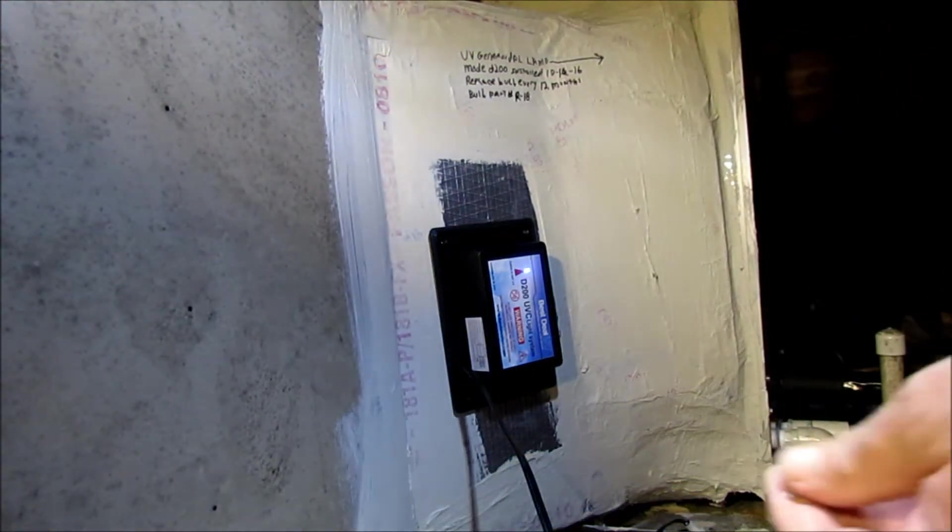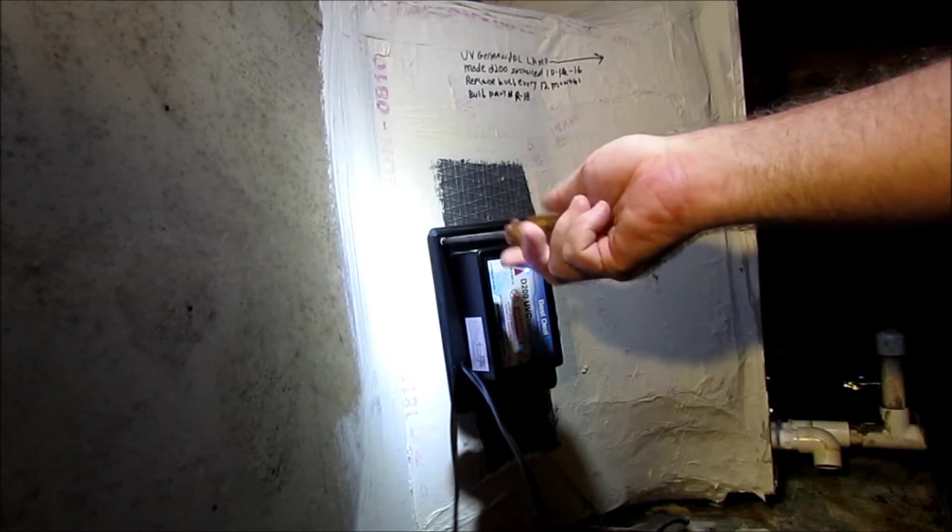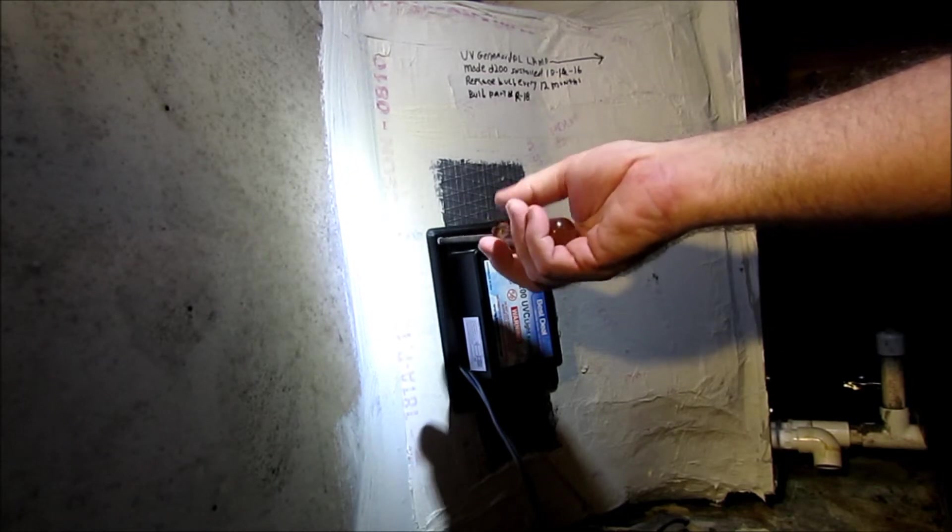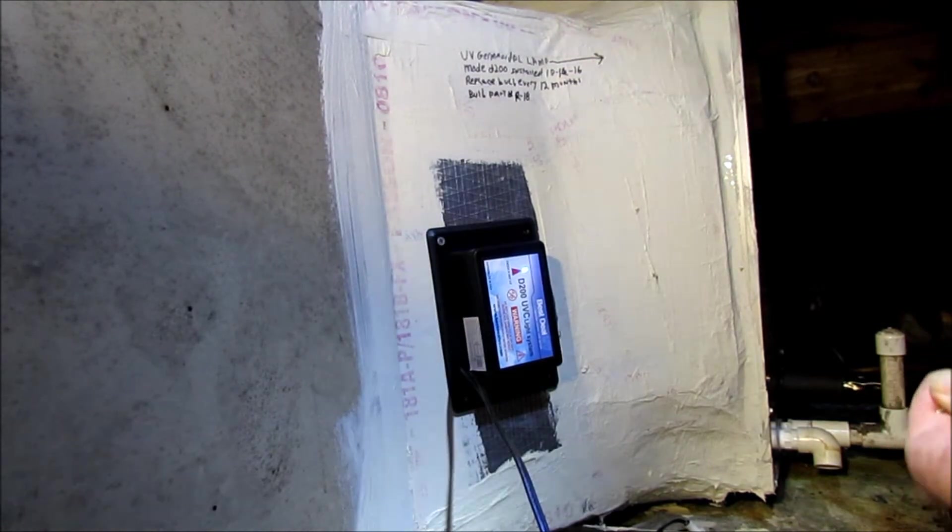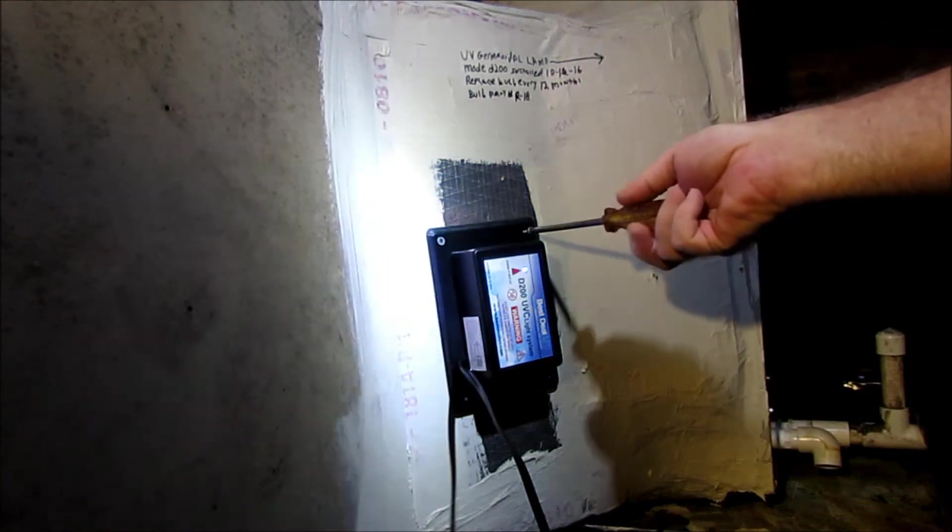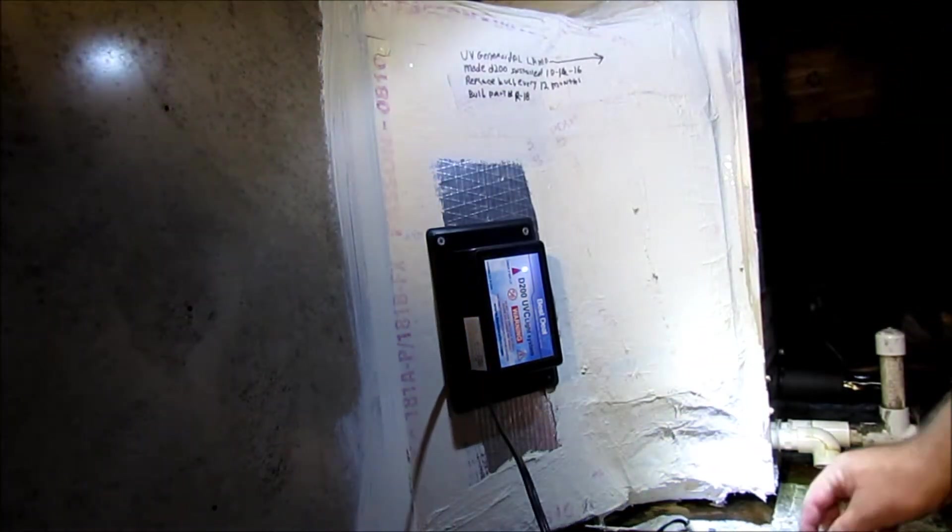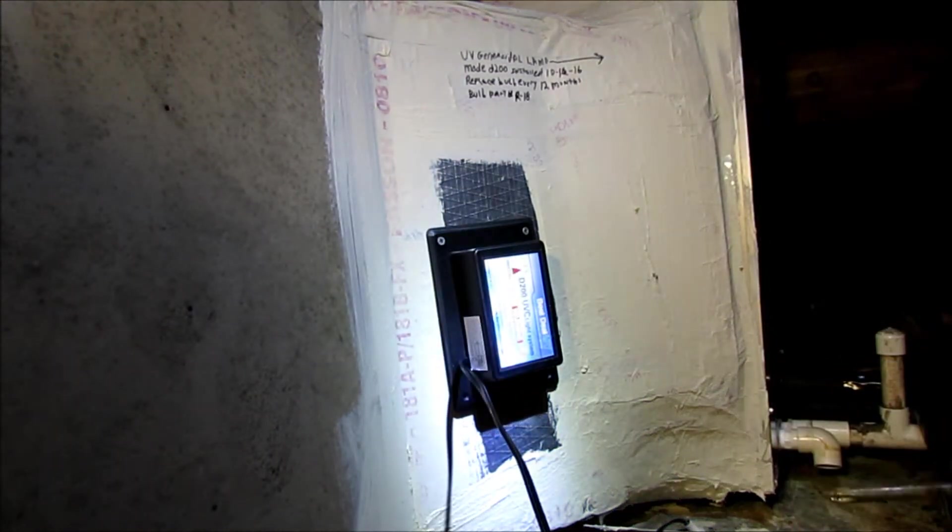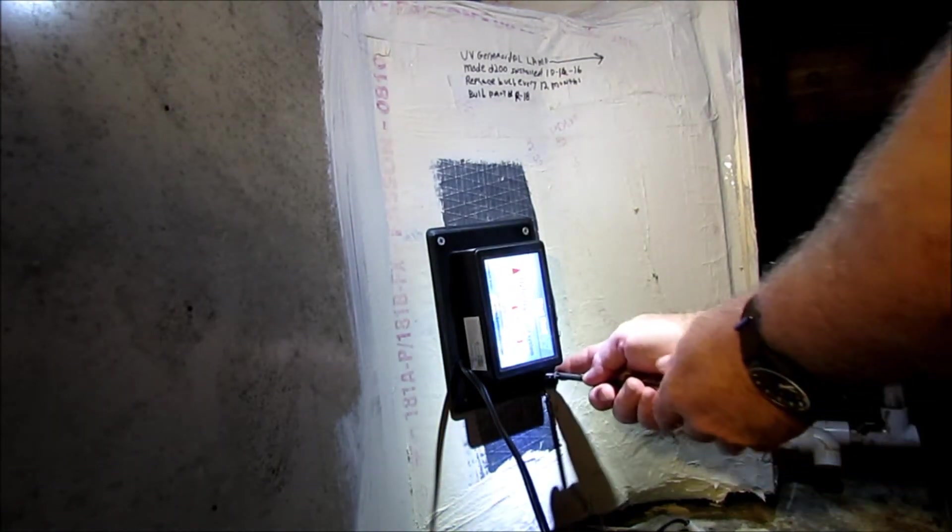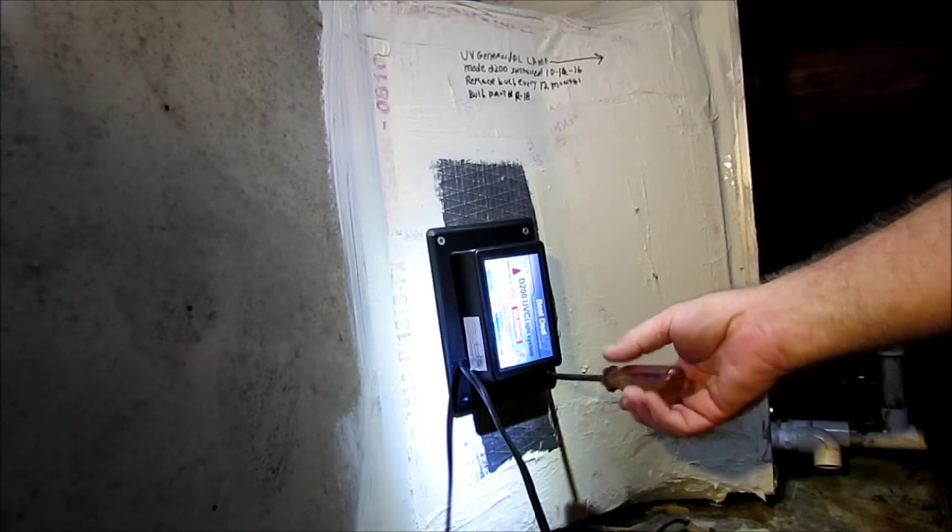You can take sheetrock screws just to kind of hold it in place. You have to do it real light, real light, just enough to barely keep it snug because you are threading through foam. Yep, lost that one. But you really don't need to put four screws in it. In fact you really don't have to put screws at all.